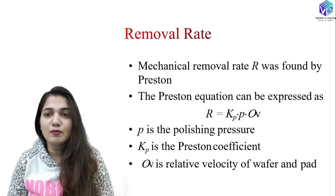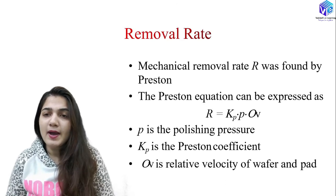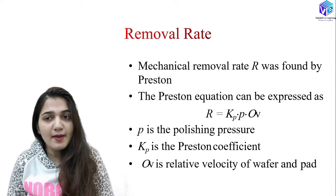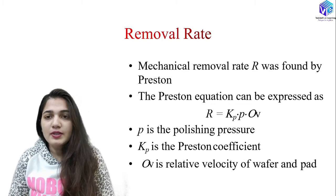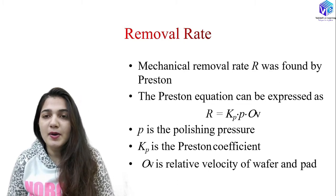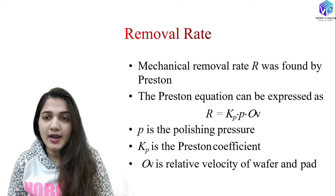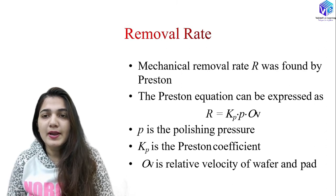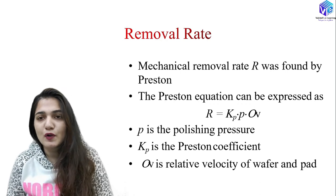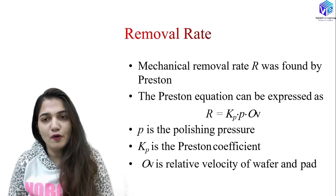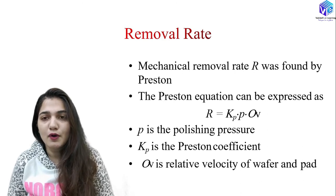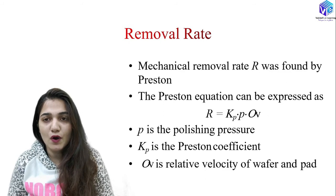First we are starting with the removal rate. The removal rate is the rate by which we remove the rough upper layer of the wafer. In CMP, we remove the uppermost rough layer of the wafer, and the rate by which we do that is the removal rate, also known as mechanical removal rate, denoted by R. Its mathematical equation was given by a scientist called Preston.